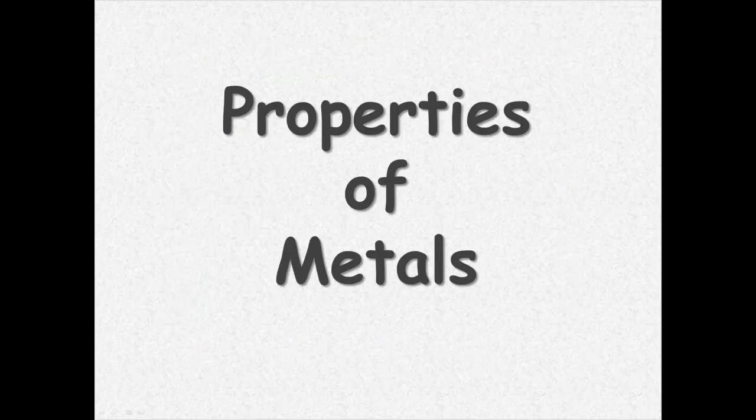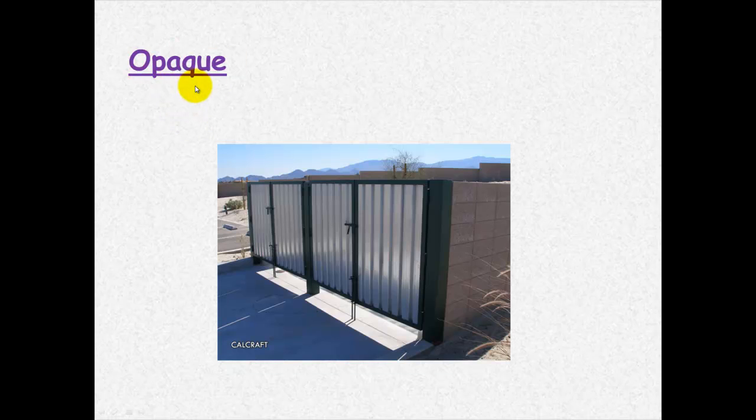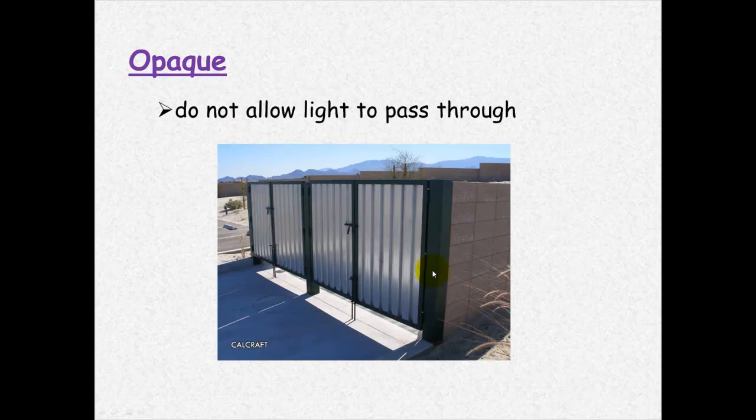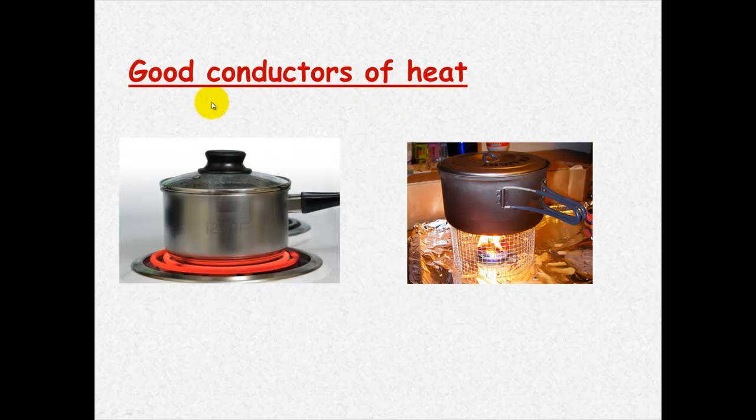Properties of metals. Metals are lustrous, you can see here that it's nice and shiny and lustrous means that it reflects light. They are opaque which means light can't pass through. You can't see through it because of that. They're good conductors of electricity, they're good conductors of heat, and that's why we use them for cooking.